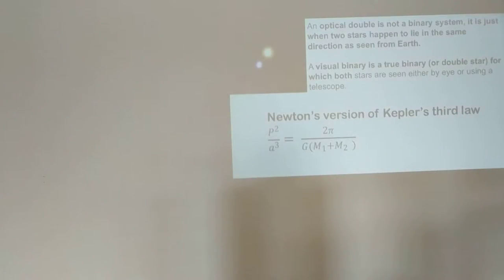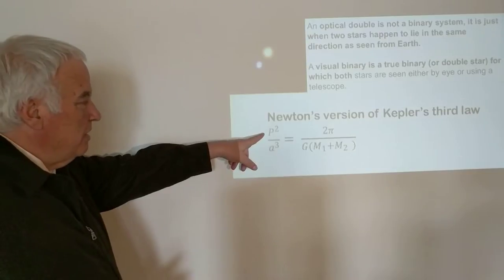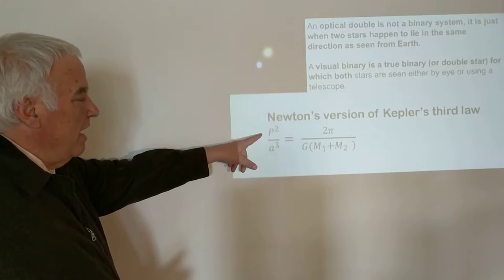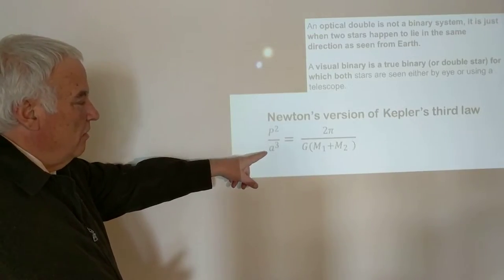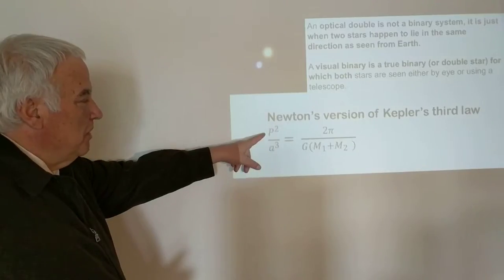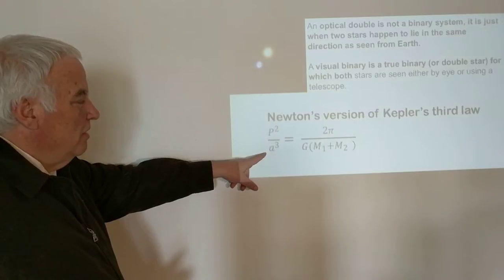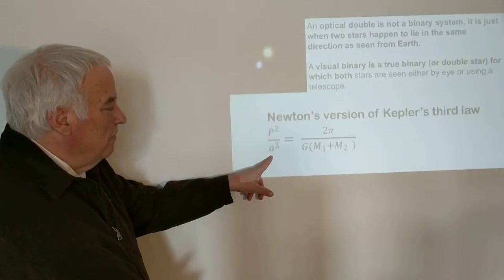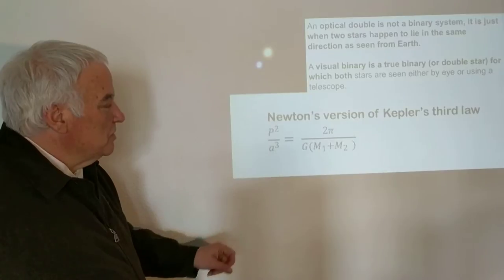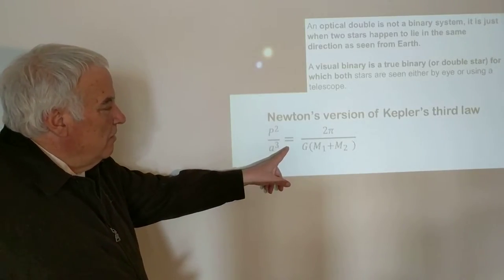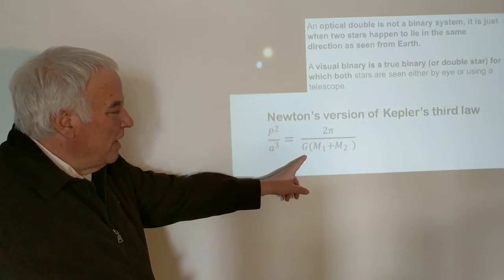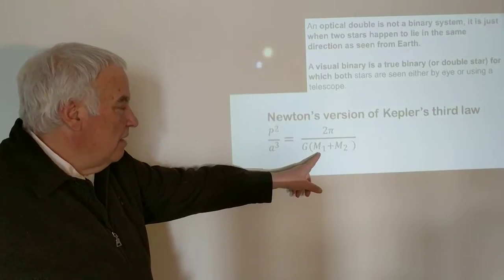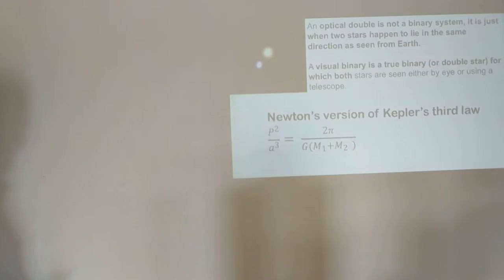Newton's version of Kepler's third law involves the period, the time taken for the stars to orbit the center of mass, and the semi-major axis of the orbit. It's the period squared divided by the semi-major axis cubed, which equals 2π divided by the universal constant of gravitation times the sum of the two masses. This is exactly what works in the solar system, except here it's applied to a binary star.